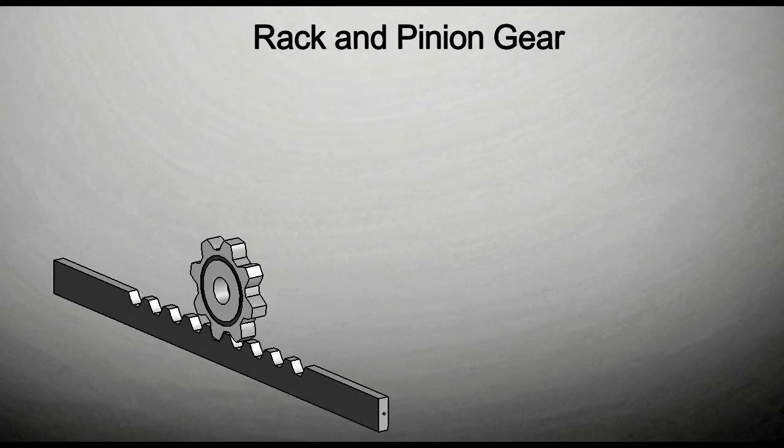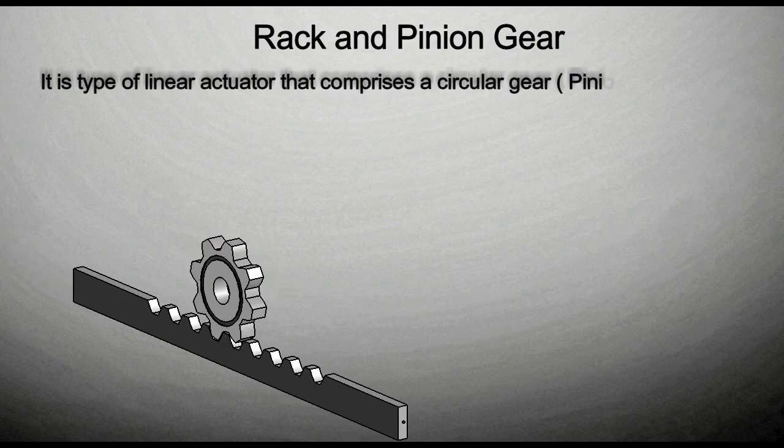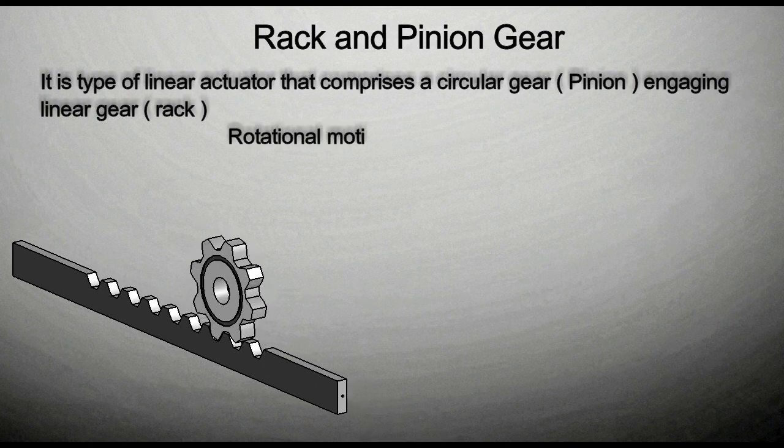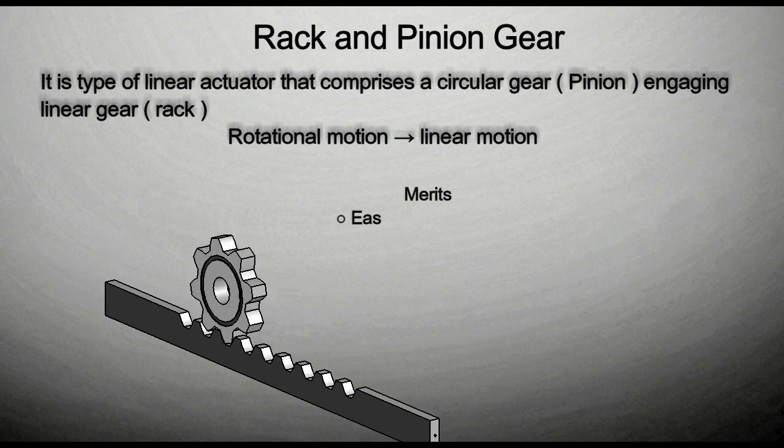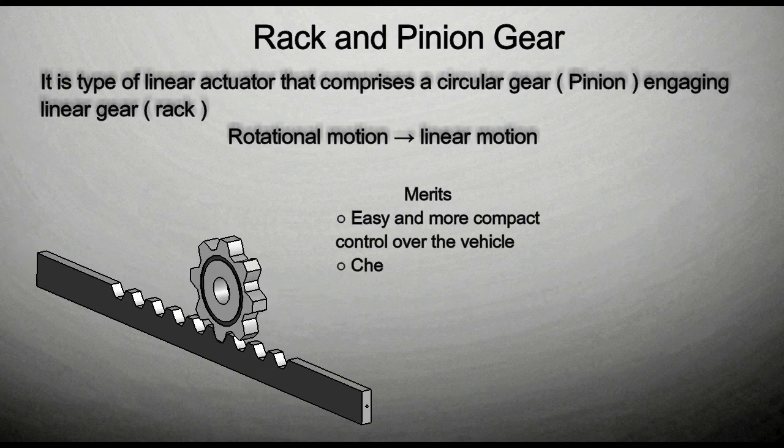Rack and pinion gear. It is a type of linear actuator that comprises a circular gear called pinion engaging with a linear gear called rack. It converts rotational motion to linear motion. Merits of rack and pinion gear. Rack and pinion gear gives easier and more compact control over the vehicle. It is cheap, compact and robust.